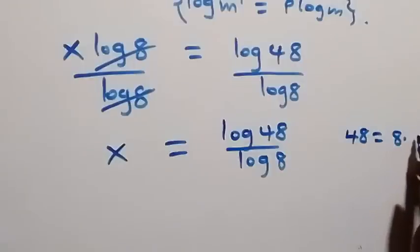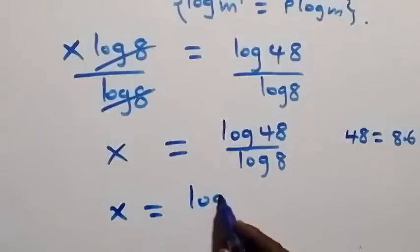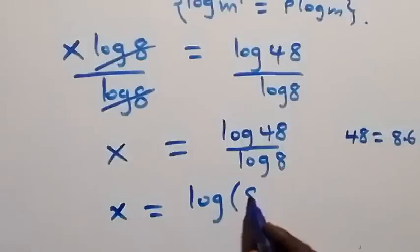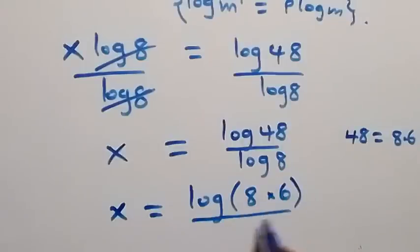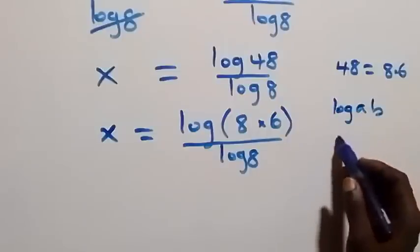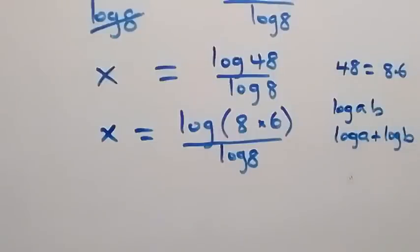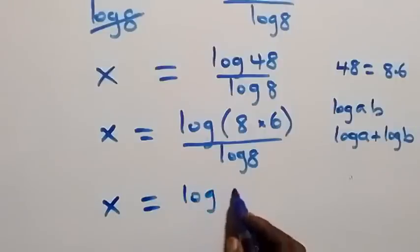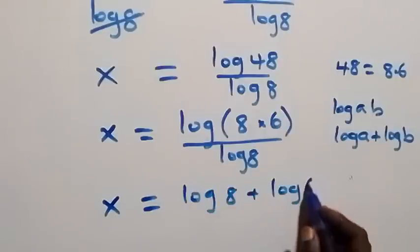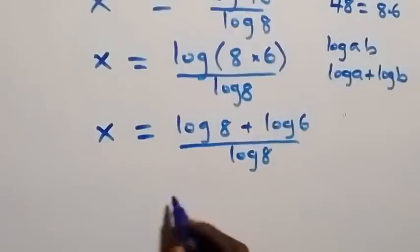From what we have here, we can write 48 as 8 times 6, which implies x equals log of bracket 8 times 6 divided by log 8. From the law of logarithms, when we have log a times b, this can be written as log a plus log b. Applying that here, we have x equals log 8 plus log 6, over log 8.